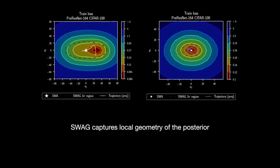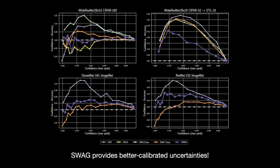SWAG captures the local geometry of the posterior remarkably well. In the slide, we visualize the posterior log-density surface for ResNet-156 on CIFAR-10 in the subspaces spanned by the first and second, and third and fourth PCA components of the SGD trajectory. SWAG variances are aligned with the posterior widths along the PCA directions. We apply SWAG to a range of tasks including image classification, language modeling, and tabular regression.